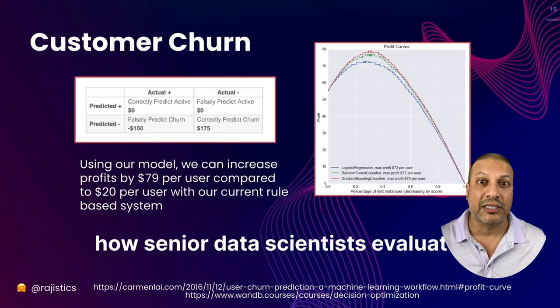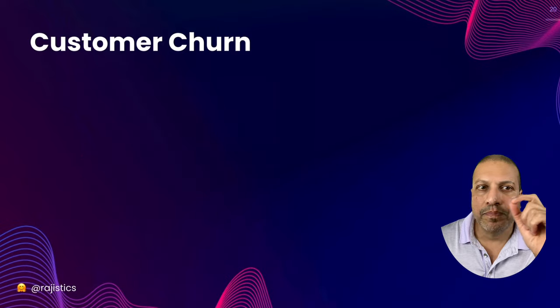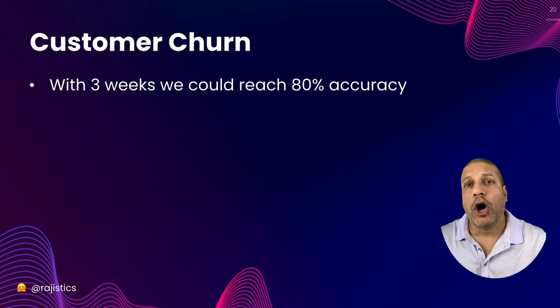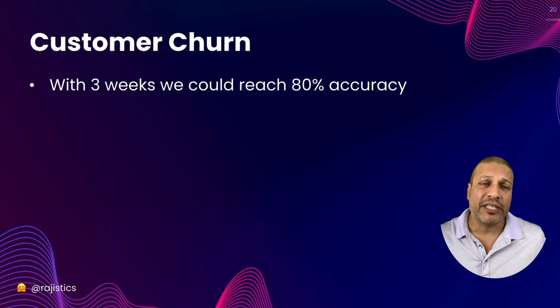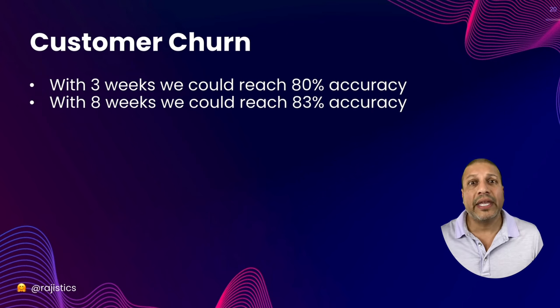That deeper understanding in line with the business is how a senior data scientist — someone who knows they have to sell the model to the business — thinks about it. There's still one other level: a systems approach where someone says within three weeks we can hit 80% accuracy, but with eight weeks we can hit 83%. Understanding total cost of ownership of the modeling process — that's how a data science leader thinks about it.